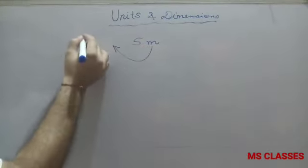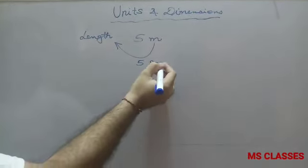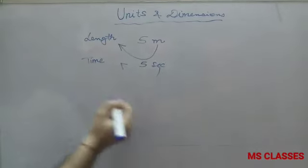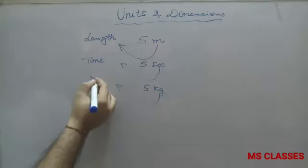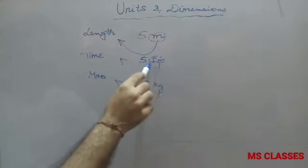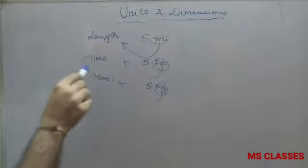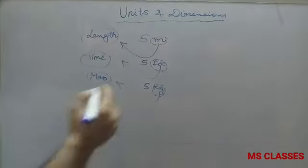is giving us an idea about length. If I write five seconds, that gives us an idea about time. And five kg gives us an idea about mass. So we can say that this something which gives us an idea about the physical quantity is called a unit.